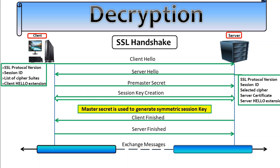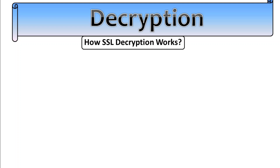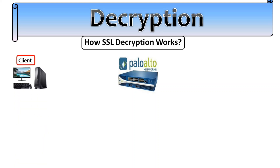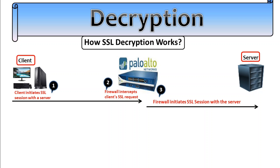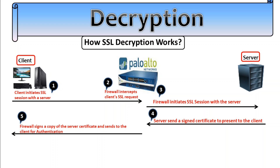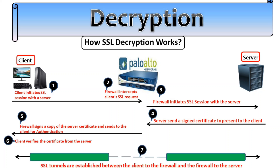Now let's understand how decryption works. We have a Palo Alto firewall sitting between a client and a server. First, the client initiates an SSL session with the server, where the firewall intercepts the client's SSL request. The firewall then initiates its own SSL session with the server. The server sends a signed certificate; the firewall signs a copy of that server certificate and sends it to the client for authentication. The client verifies the certificate, and SSL tunnels are established — one between the client and the firewall, and another between the firewall and the server. This is how the firewall intercepts and decrypts traffic while sitting between the client and server.